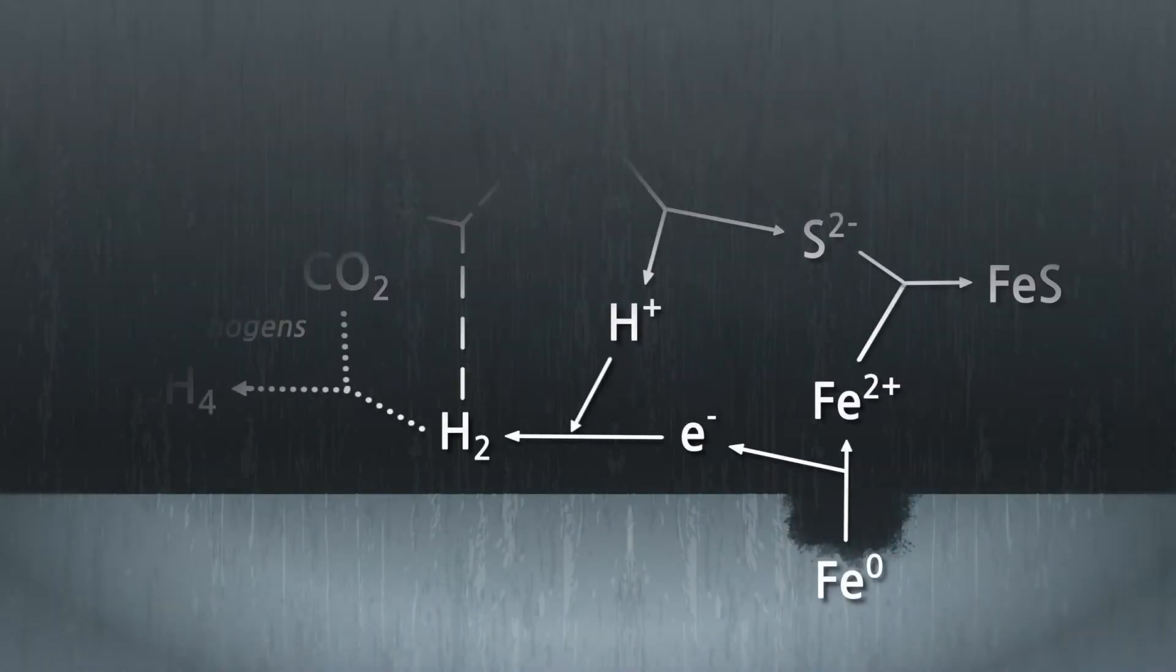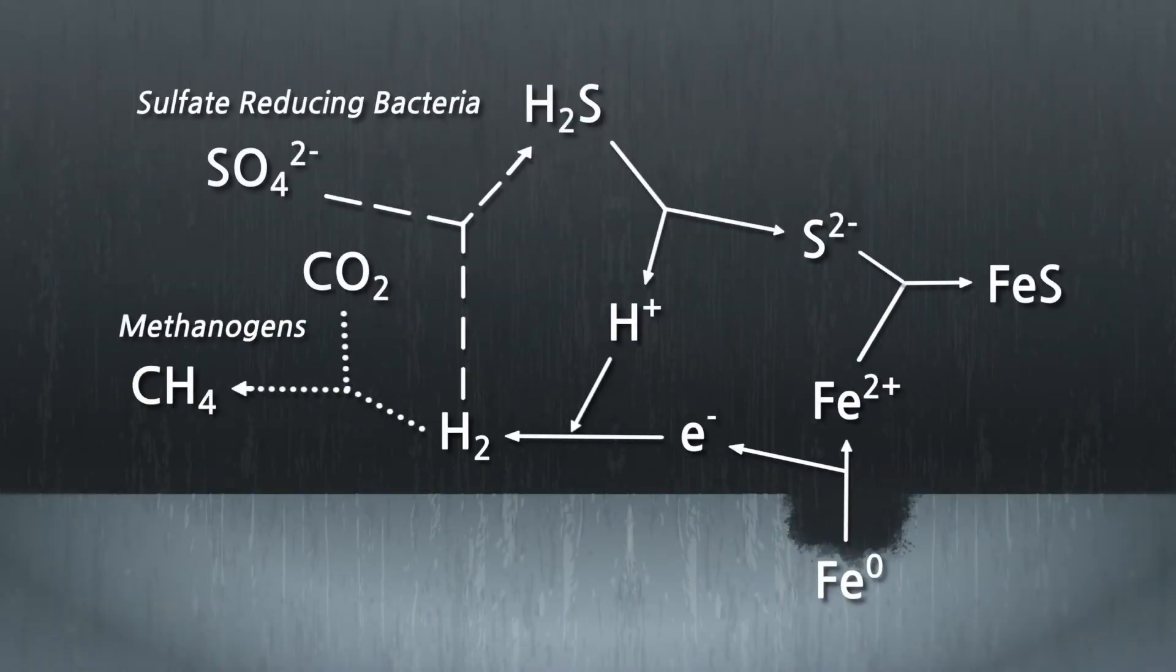As an example of active biofilm involvement in corrosion under anaerobic conditions, both SRB and methanogens can promote cathodic depolarization by hydrogen consumption. SRB uses hydrogen and sulfate to produce sulfide, while methanogens use hydrogen and CO2, or acetate, to produce methane. Acetogens in the biofilm may contribute synergistically to the cathodic reaction by providing organic carbon in the form of acetate.